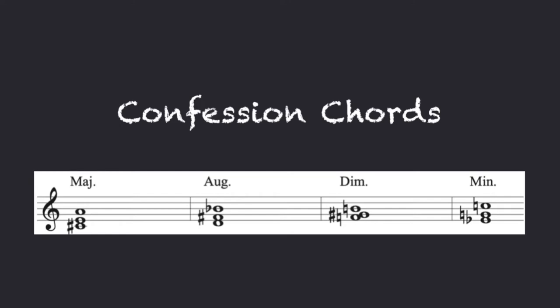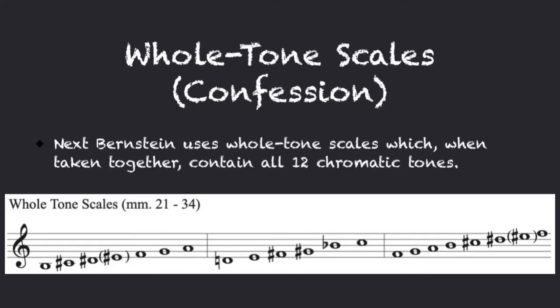He combines the major and minor triads to create a polychord, then repeats the procedure with the augmented and diminished triads. Next, Bernstein uses whole-tone scales which, when taken together, contain all twelve chromatic tones.